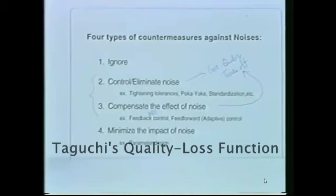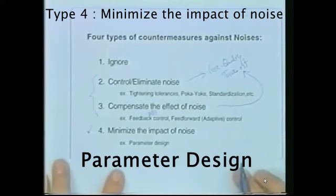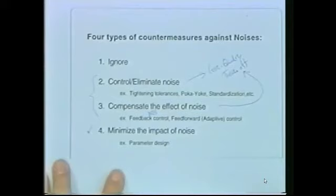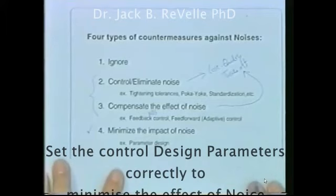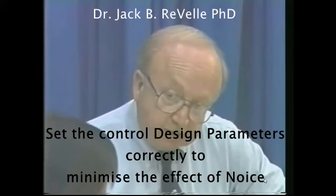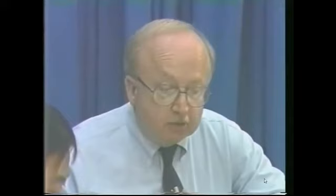The last type of countermeasure is what we call parameter design — to minimize the impact of noise by changing control factor levels. This gives you the best chance to reduce variability of the function without increasing cost. Once you've identified the various control parameters and which ones you want to experiment with, you go into the parameter design phase and set up those parameters at the desired number of levels using an orthogonal array in order to create the robust design you're targeting.